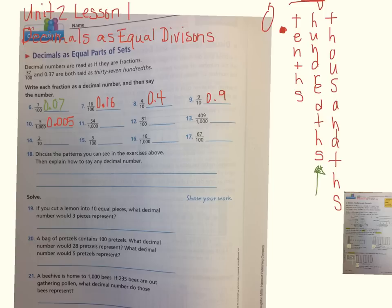Fifty-four thousandths: placeholder, decimal, tenths, fifty-four thousandths.